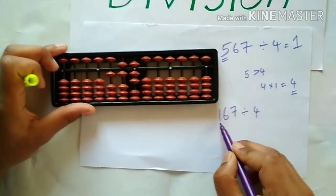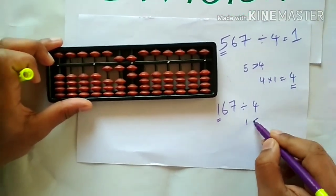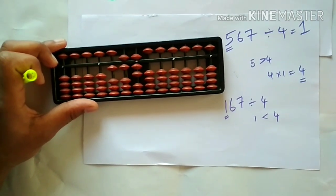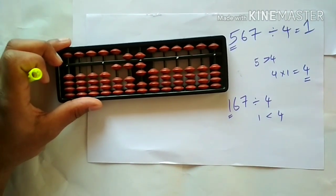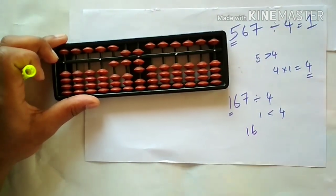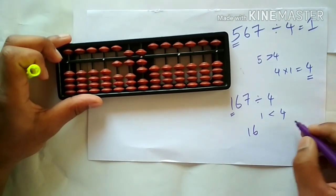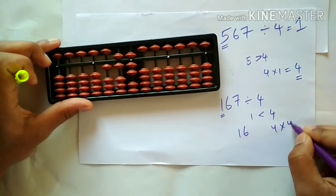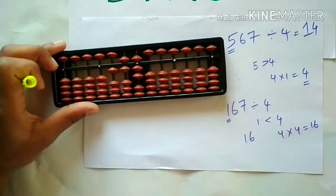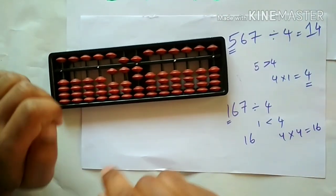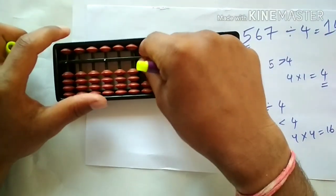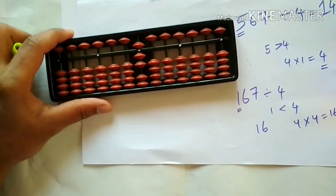Again, check the first digit — here 1 is less than 4, so 1 cannot be divided directly with 4. So let's take the first 2 digits; here the first 2 digits are 16. We know that in the 4 table, 16 can be done as 4 into 4 is equal to 16. So let's write 4 here and subtract 16 from the 100's round. Now we are left with 7 on the abacus.